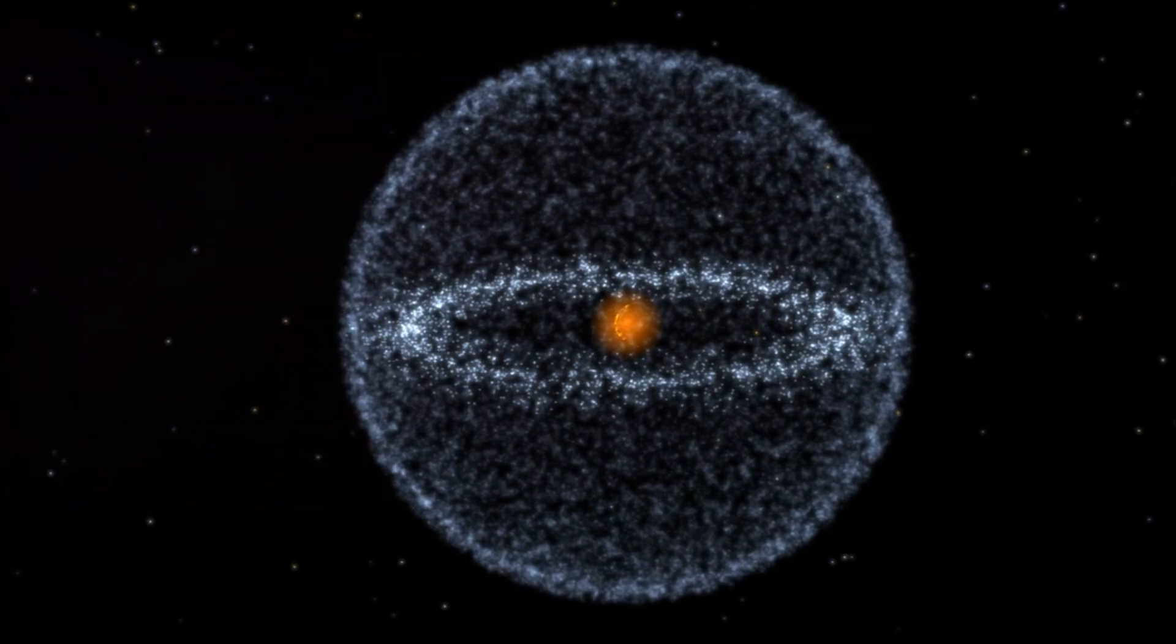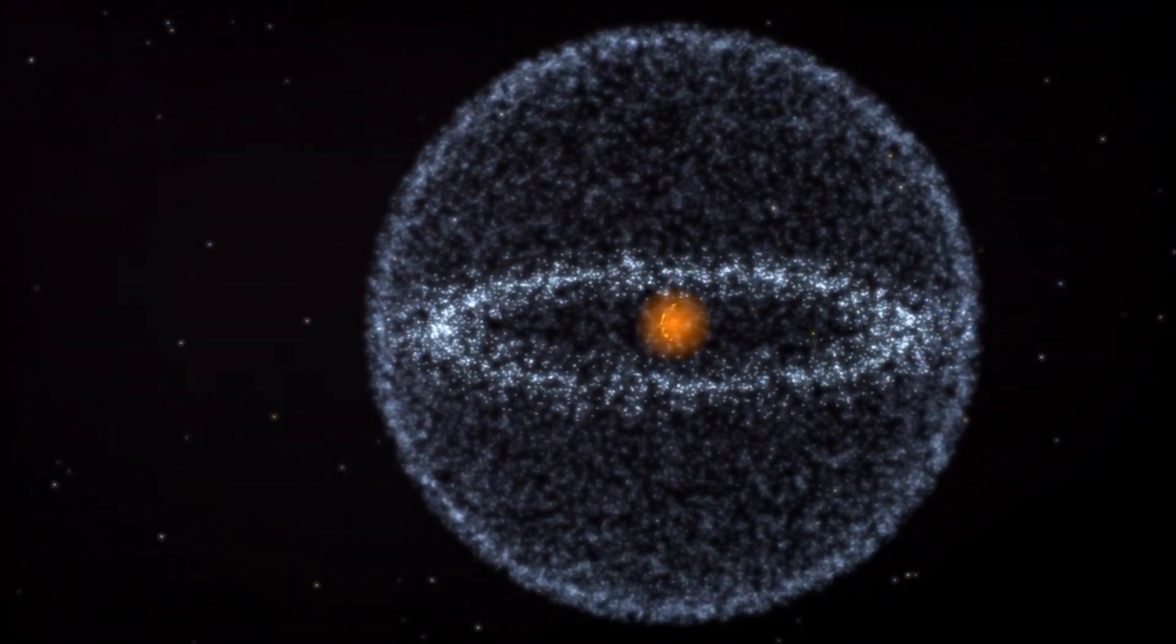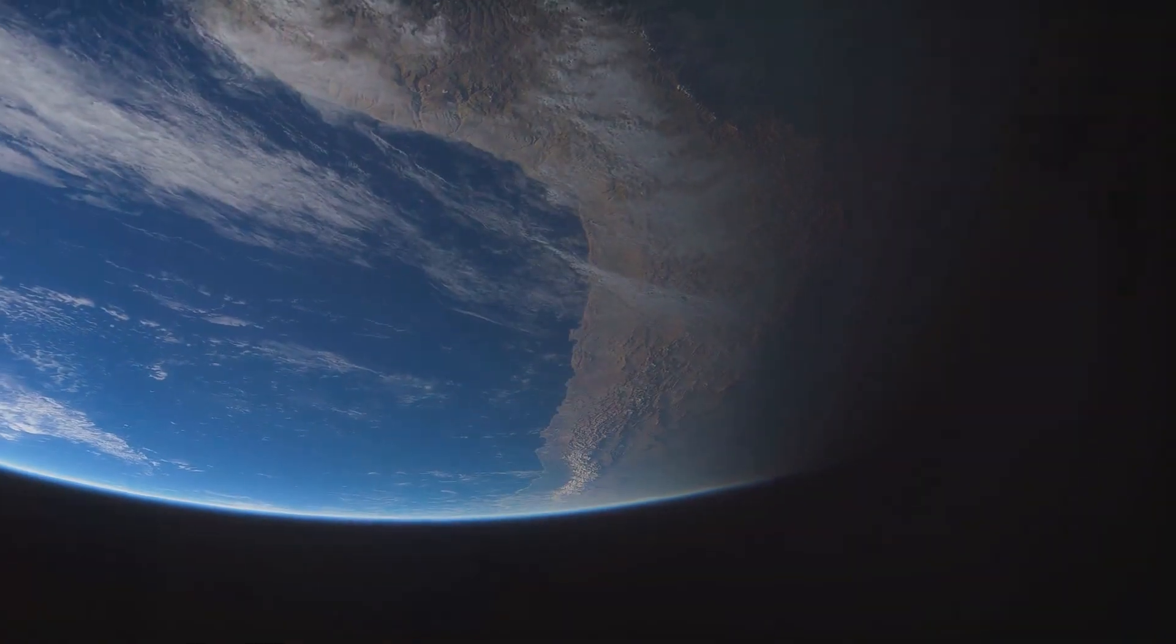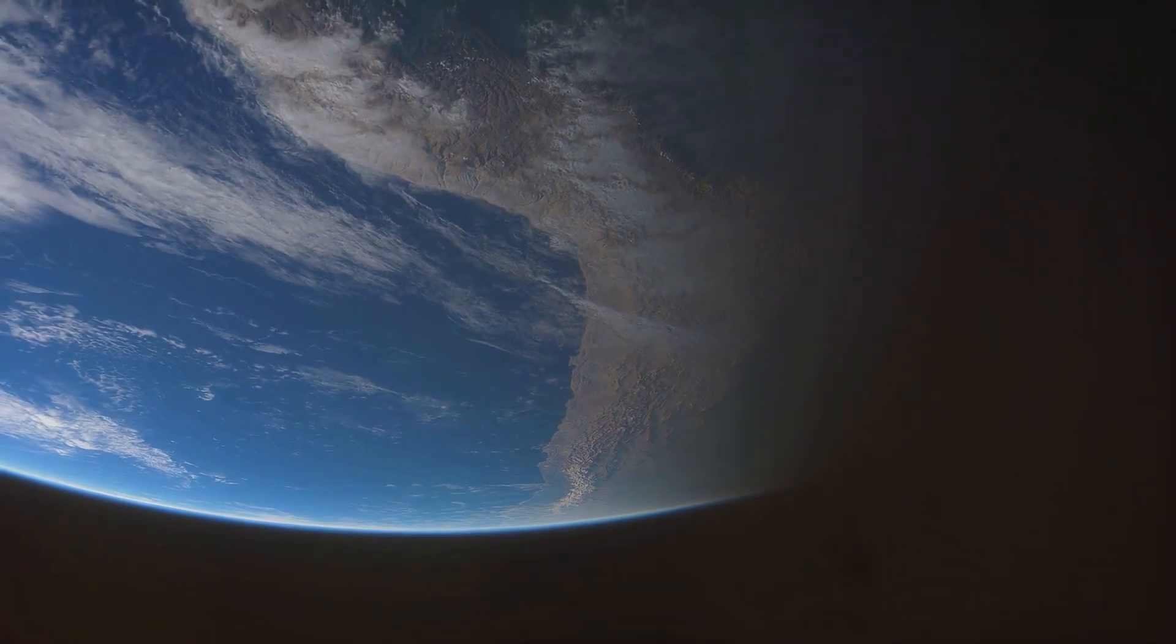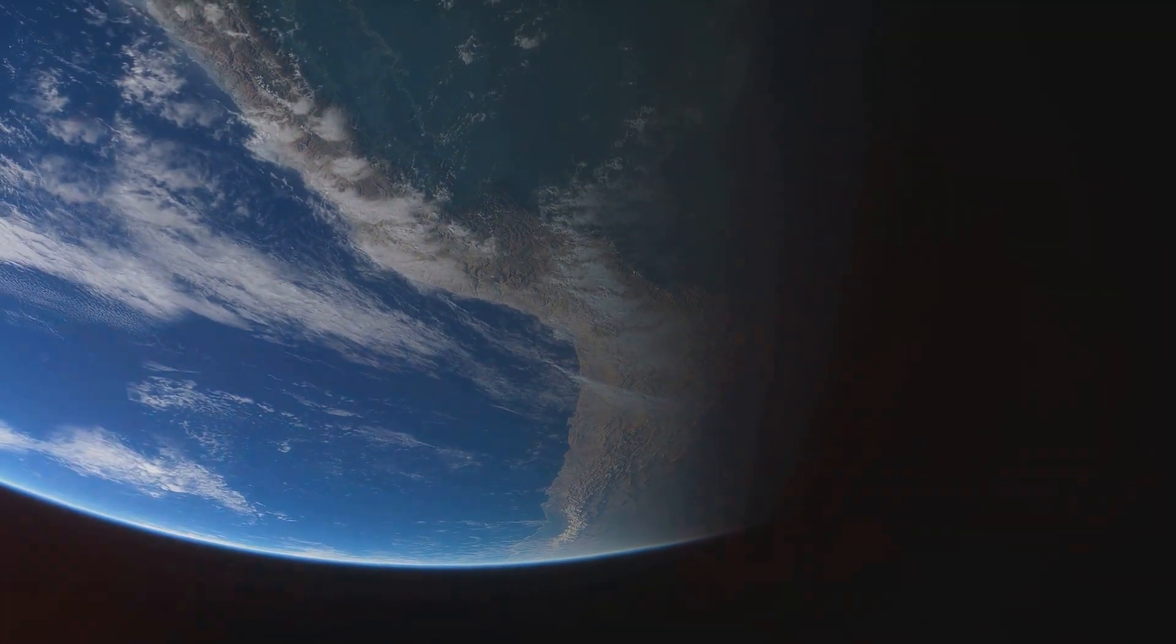The Oort Cloud resides in the farthest reaches of the sun's gravitational influence, a region so remote that it challenges our understanding of the solar system's boundaries. It's so distant that one astronomical unit, the distance between the Earth and the sun, becomes a meaningless measure in this context.